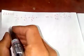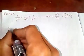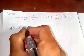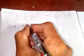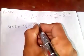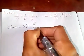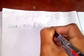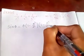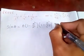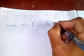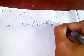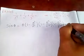We know we have already learned that sin(θ) equals θ times 1 minus θ squared over π squared, times 1 minus θ squared over 2 squared π squared, times 1 minus θ squared over 3 squared π squared, and so on.